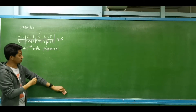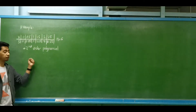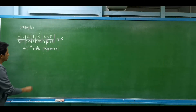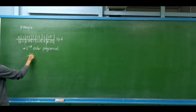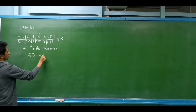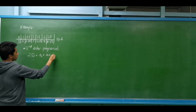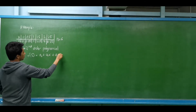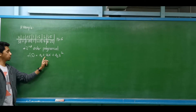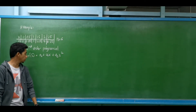Let's have our next example. This is for curve fitting for a second-order polynomial. Let's understand the equation: f(x) = a₀ + a₁x + a₂x². We have three unknowns — a₀, a₁, a₂ — which means we need three equations.